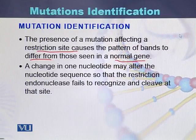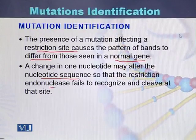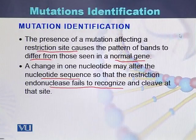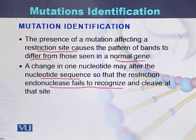A change in a nucleotide may alter the nucleotide sequence, so the restriction endonuclease fails to recognize and cleave the DNA from that particular site. This is the basic principle of how mutations are identified in the case of Southern blotting.